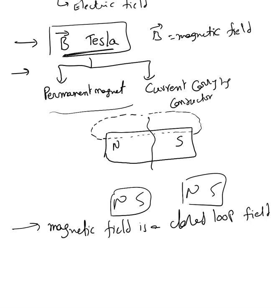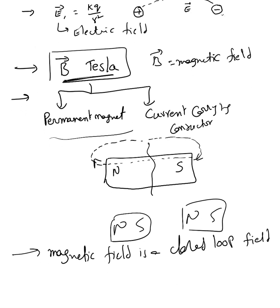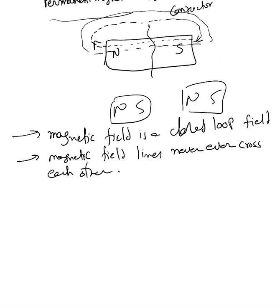The magnetic field comes out of the north pole and gets into the south pole — it's a closed loop, with no starting or ending point. This is different from the electric field, which starts at a positive charge and ends at a negative charge. The magnetic field lines never cross each other, similar to electric field lines.